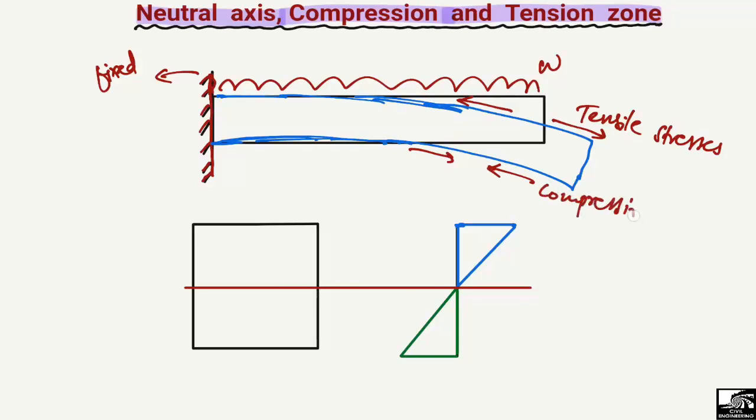Compression always leads to contraction of the beam, while tensile stresses always lead to extension or expansion of the length of the beam. So the general behavior of the cantilever beam is that the top portion of the beam will be in tension and the bottom will be in compression.